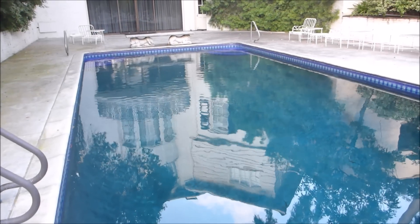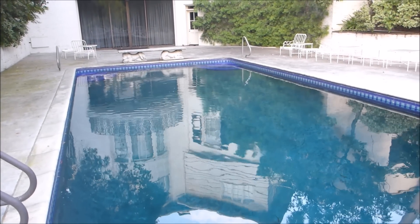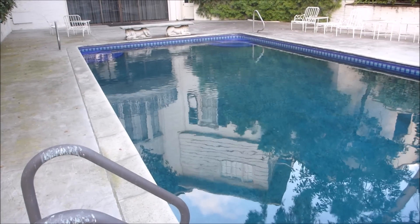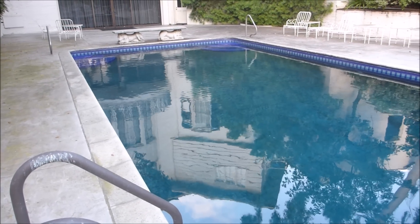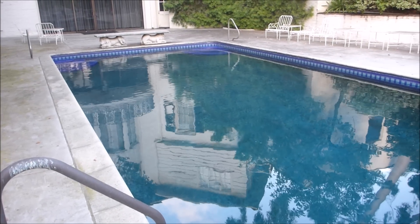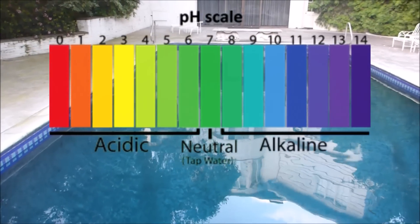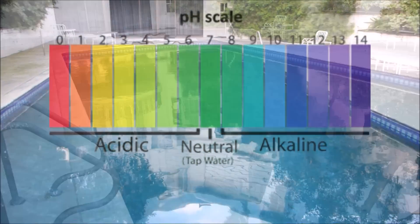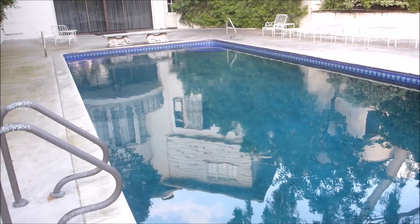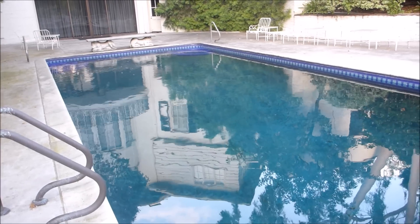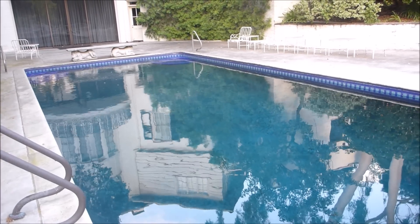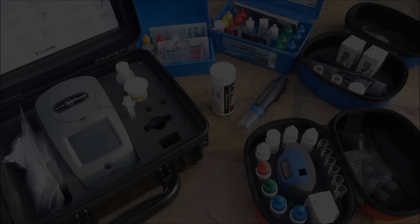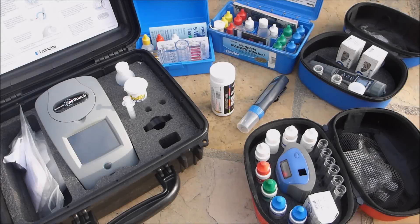One of the most important test factors for your pool water is the pH. The pH is basically just a measurement of how acidic or base the water is. The range of pH is from 0 to 14, with 7 being neutral. When you think of items that are acidic, you think of lemons and vinegar; when you think of items that are base, you think of baking soda.